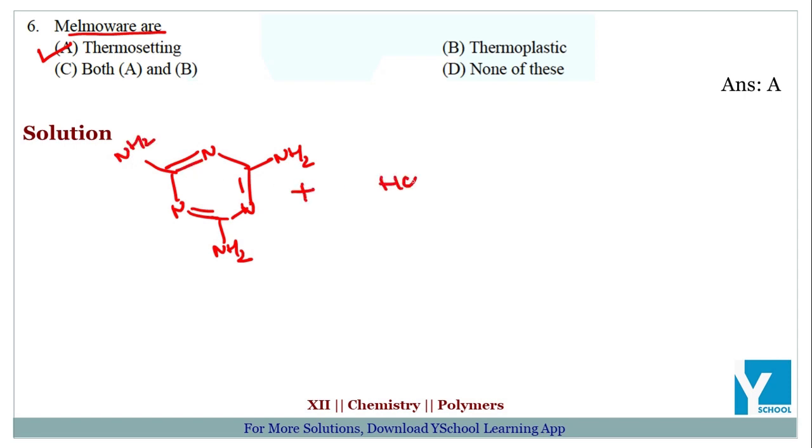Plus we have CH of formaldehyde. These react together to form the polymer melamine, which is a basic thermosetting polymer.